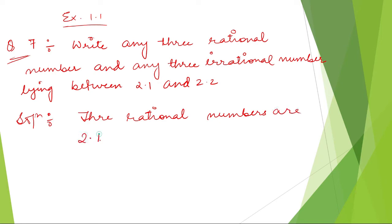So we can write down 2.12, any number, 2.13, 2.14. That's all, or you can write down 2.11, any number. You can write down any three numbers which must be between 2.1 and 2.2, and it must be a rational number.